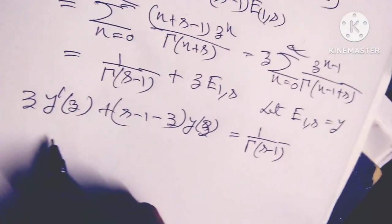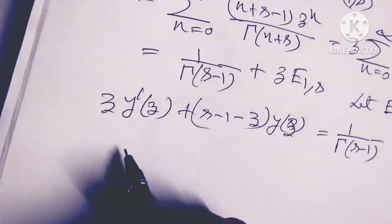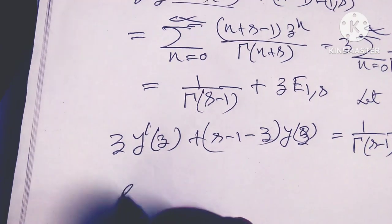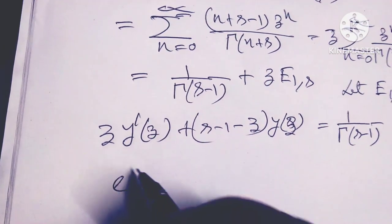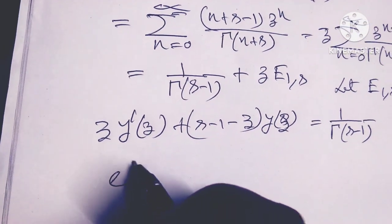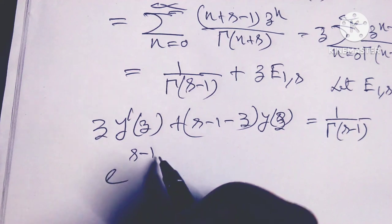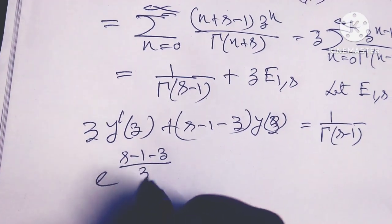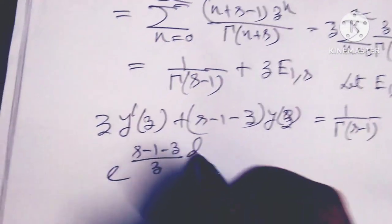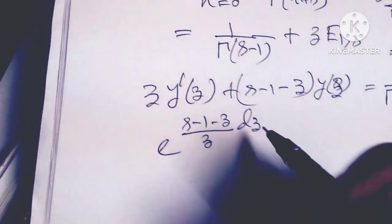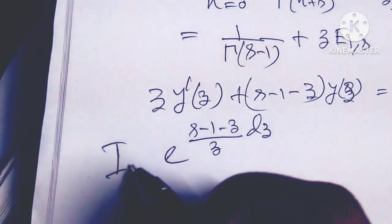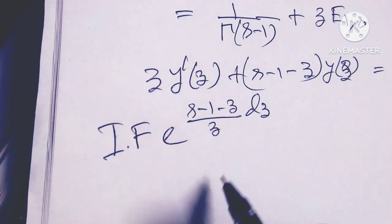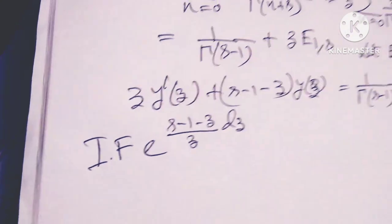To solve this, I differentiate and find the integrating factor. The integrating factor is z to the power (s minus 1) times e to the power (minus z), divided by z.